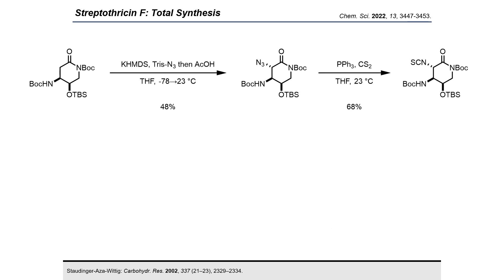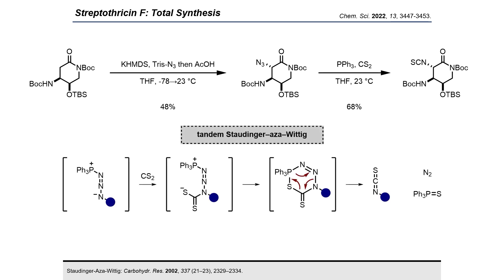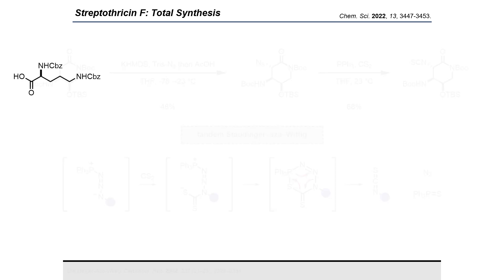Our resulting alpha-azidolactam could then be directly transformed into the isothiocyanate in the presence of triphenylphosphine and excess carbon disulfide. This reaction, dubbed the Staudinger-azawittig reaction, is believed to proceed through a transient phosphazide which, upon interaction with carbon disulfide, forms a six-membered transition state that results in the expulsion of nitrogen gas, triphenylphosphine sulfide, and our isothiocyanate product.